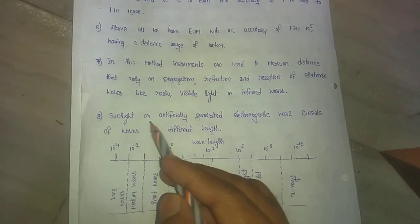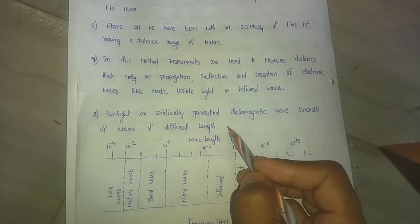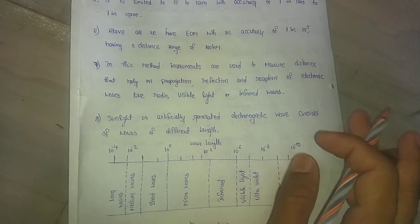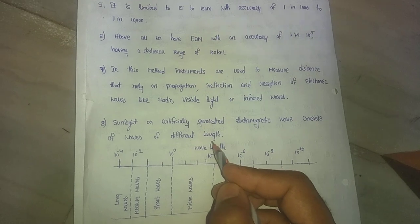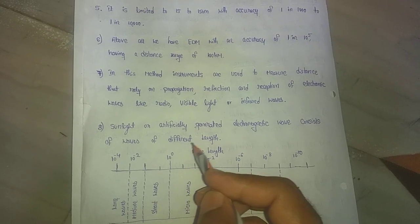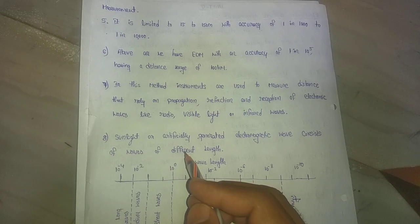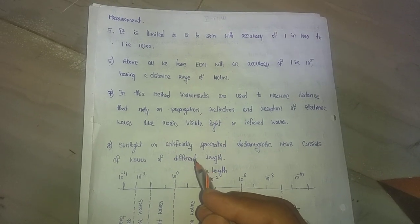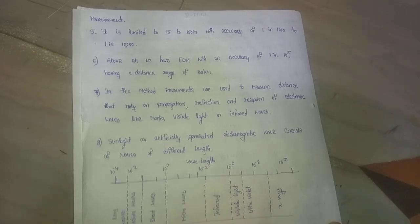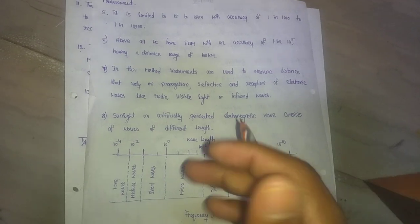In general, sunlight or artificially generated electromagnetic waves consist of waves of different lengths. We are using sunlight and artificial electromagnetic wave lengths to create waves. These waves have different lengths, including long waves, medium waves and short waves, each having some range.